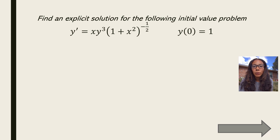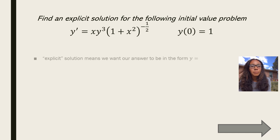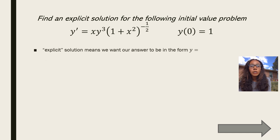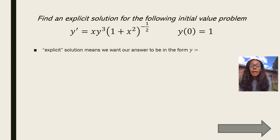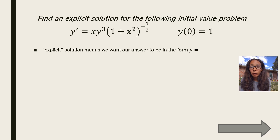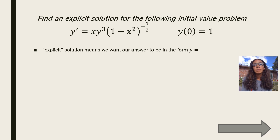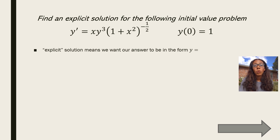There are a few things we want to remember when solving these types of problems. First, an explicit solution means we want our answer to be in the form y equals. In previous problems we were okay leaving it as y squared or in some other form, but when we're asked to solve explicitly, we need to manipulate our equation down to the form y equals.